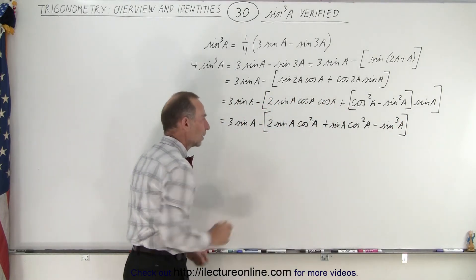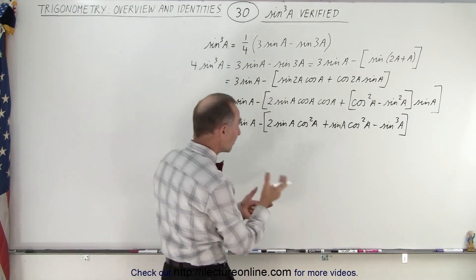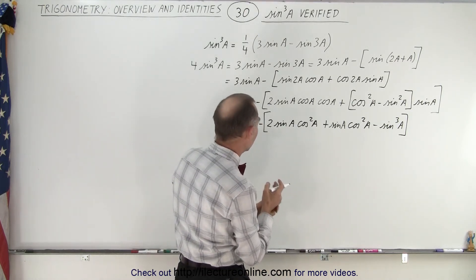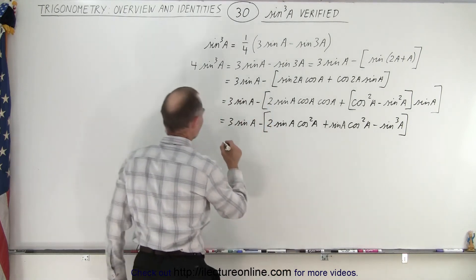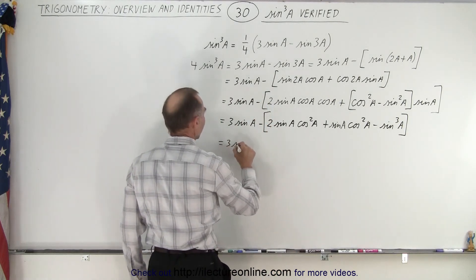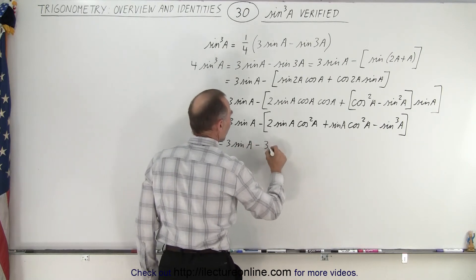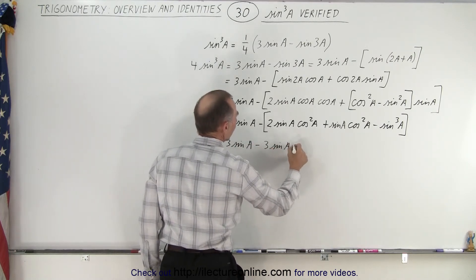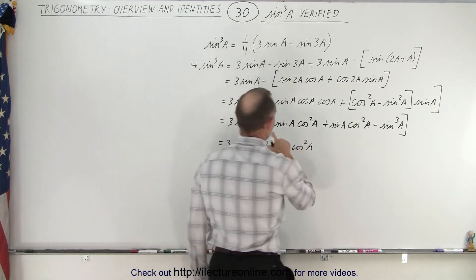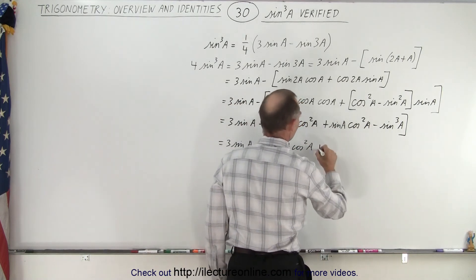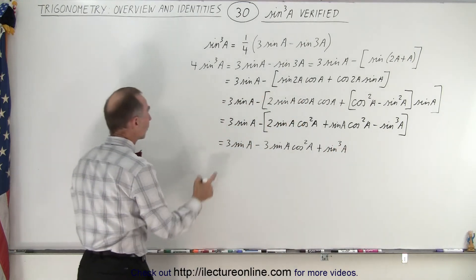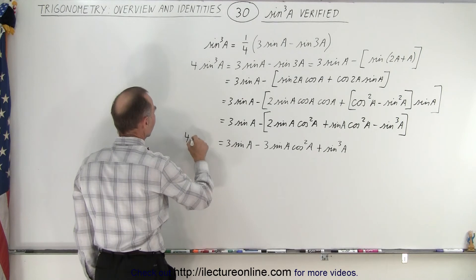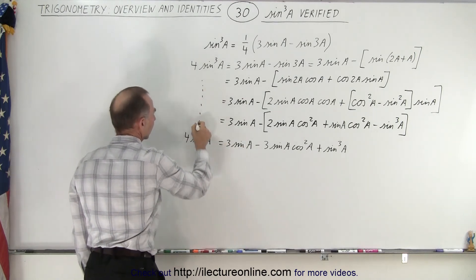Now I can take the brackets away and apply the negative sign. I have sinA cos²A terms: one from the 3sinA group and two from inside the bracket — that gives three of them with a minus. So this becomes 3 sine of A minus 3 sinA cos²A, and the minus applied to minus becomes plus sin³A. All of this equals 4 times sine cubed of A.